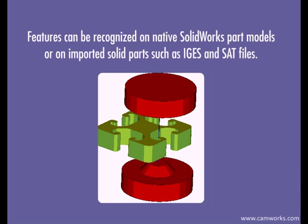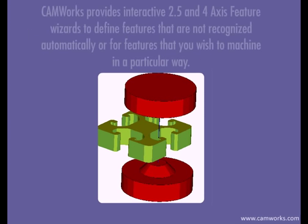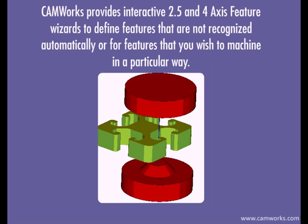Features can be recognized on native SOLIDWORKS part models or on imported solid parts such as IGES and SAT files. CAMWORKS provides interactive 2.5 and 4-axis feature wizards to define features that are not recognized automatically, or for features that you wish to machine in a particular way.